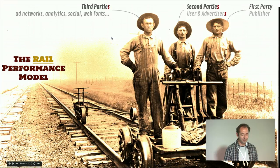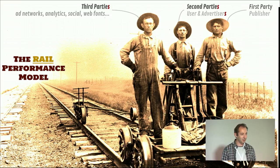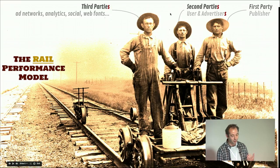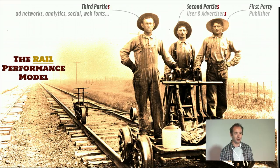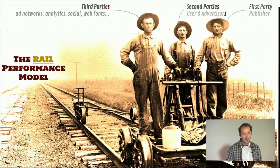What you actually have looks like a handcar with a bunch of folks on it — this is the RAIL performance model as it is today for most people who make websites. This is you, and then you have a ton of third parties, who are actually super important because without them you don't have a business most of the time. And then finally there are the second parties: users and advertisers. The main issue is that each of those folks has different goals.